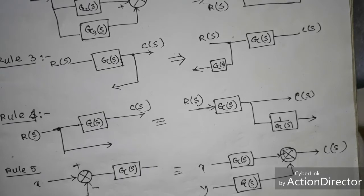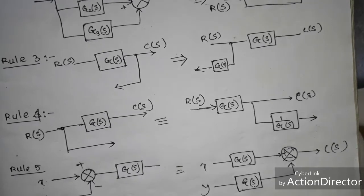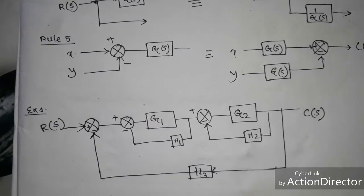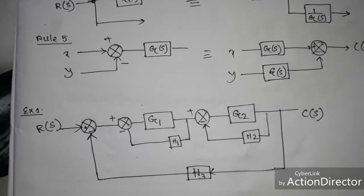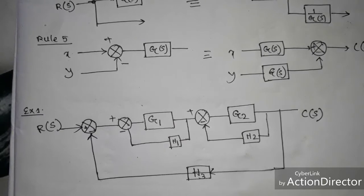You only need to know these four rules to do this method. If you know all the rules, it is very easy to do block reduction in just a few steps. We will now consider one example and try to solve it using these rules to find the transfer function of the system using block diagram reduction technique. First, you have to see the whole system, then decide which portion is easiest to solve, and choose which rule will be suitable.